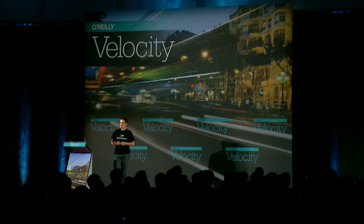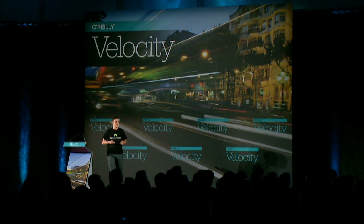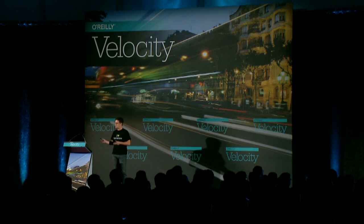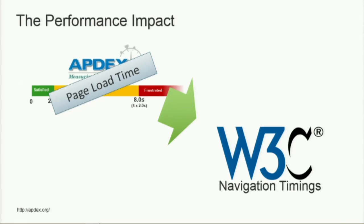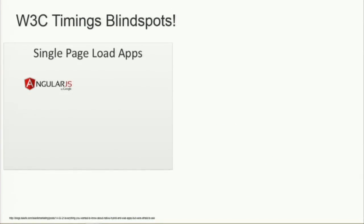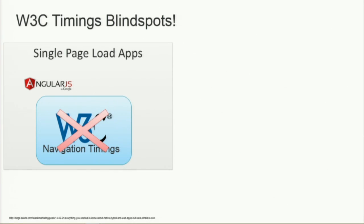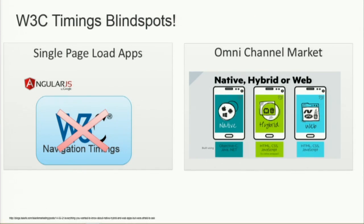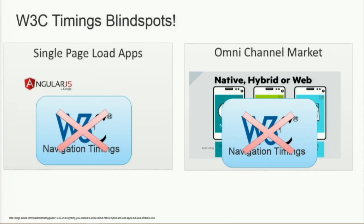apdex has nice thresholds. What we did was apply page load times to the apdex, and to measure page load time even better, we came up with the W3C navigation timings. But looking at the technical landscape today, we have blind spots. Single page apps, Angular.js — with W3C navigation timings you get a single page load at the beginning and that's it. Today we live in an omnichannel world: web, mobile apps, everything combined on our mobile devices — and again, W3C navigation timings fail. iOS 8.1 doesn't provide them at the moment.